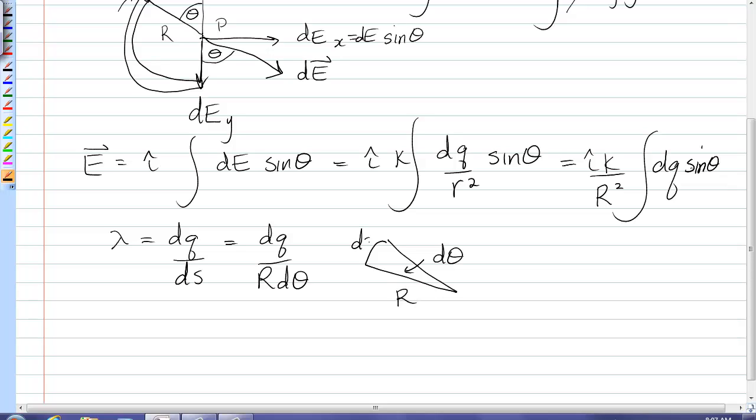So substituting that into the electric field I now get i hat k over R squared, instead of dq I write lambda R d theta sine theta. Now the lambda and the R are constant so I can bring them out. And that one R on top cancels one R on the bottom so I'm left with one R. And I need to simply integrate sine theta d theta.